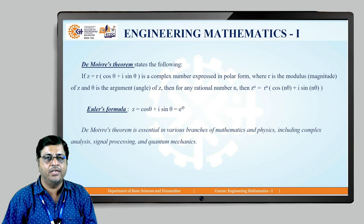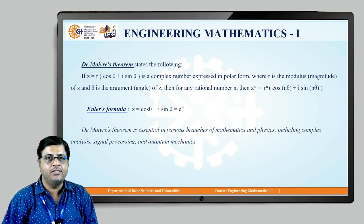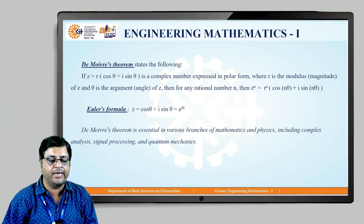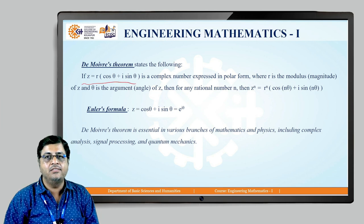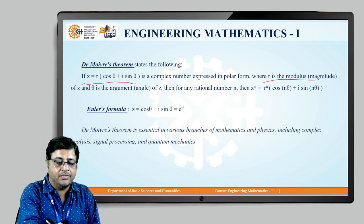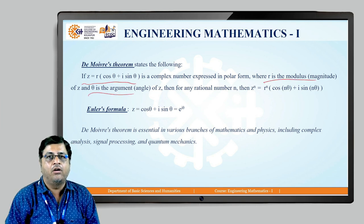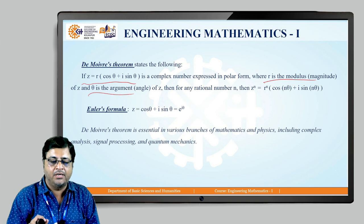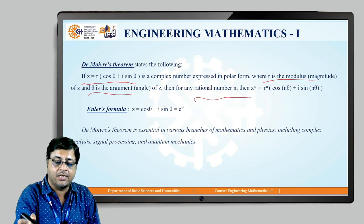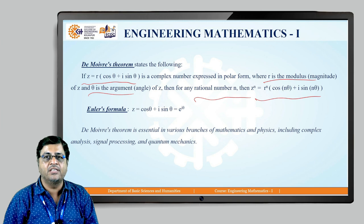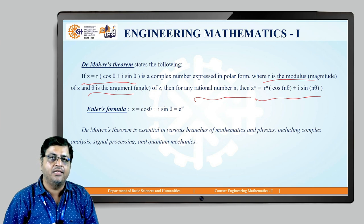That is De Moivre's theorem. As you can see on the screen, De Moivre's theorem states that if z is r times (cos θ + i sin θ), where r is the modulus and θ is the argument of the complex number, then for any rational number n, z raised to n is r raised to n times (cos nθ + i sin nθ).